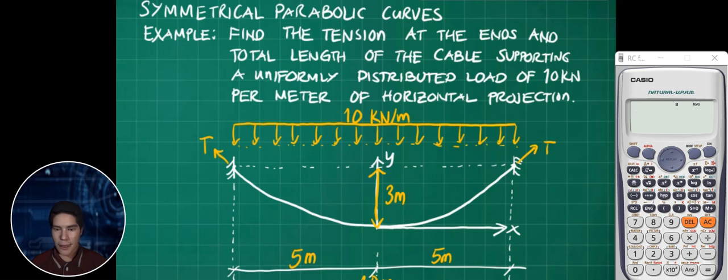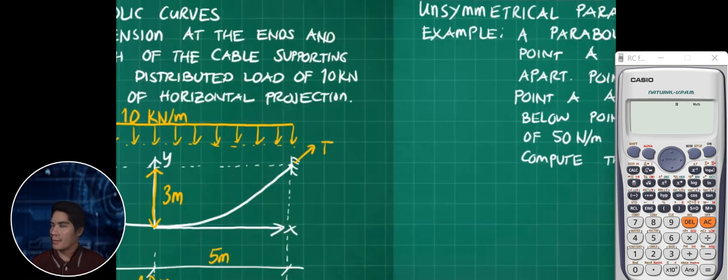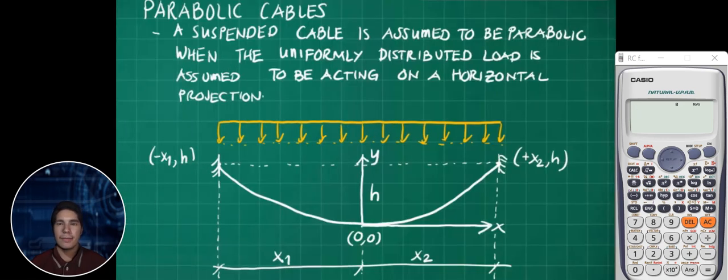In part three we'll solve unsymmetrical parabolic curve using conventional solution, and then in part four we're going to solve unsymmetrical parabolic curve using purely calculator only.